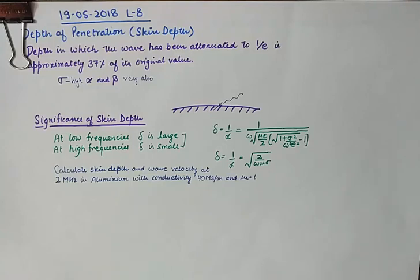According to the definition, it is the depth in which the wave has been attenuated to 1 by E, or approximately 37% of its original value.